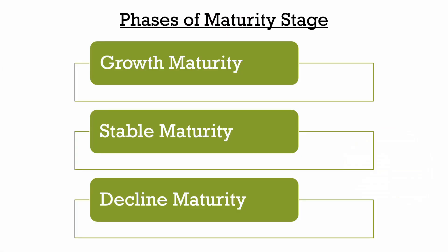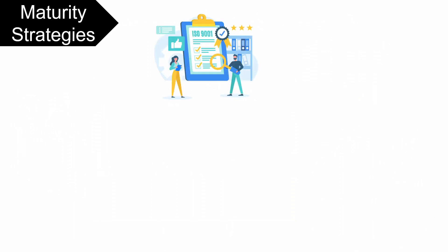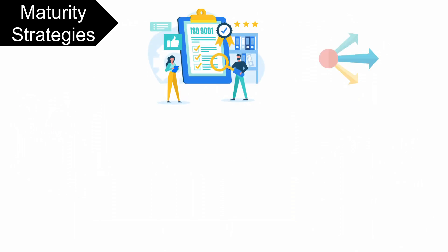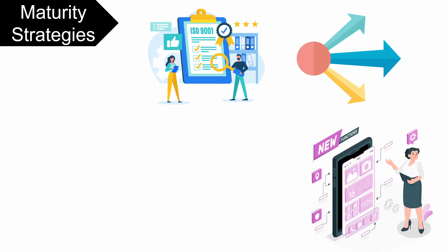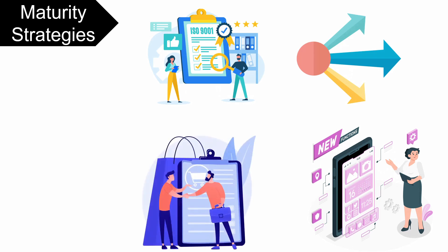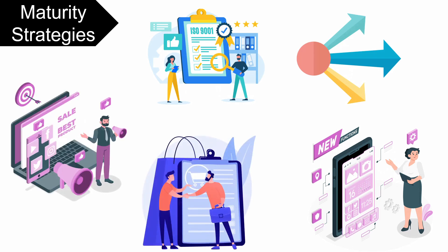Moreover, the maturity stage is divided into three phases: growth maturity, when there is a decline in sales growth rate; stable maturity, when there is stable sales; and decline maturity, when sales start to fall. At this stage the strategies used by the company include improvement in the quality of products, broadening the product line, increasing the usage of the product among customers by adding new features and utilities, forming new buyers, and devising effective promotional and advertising programs.